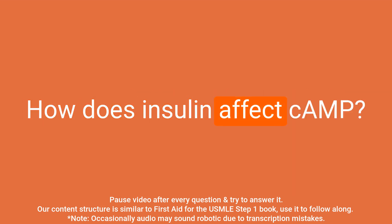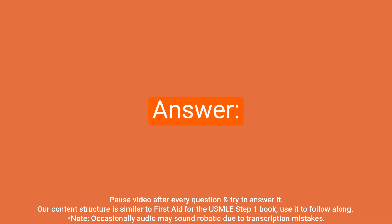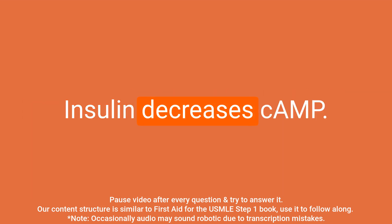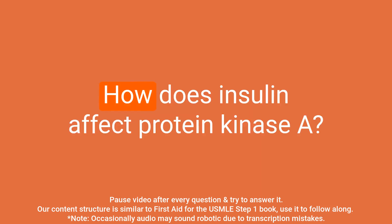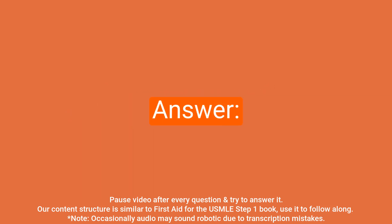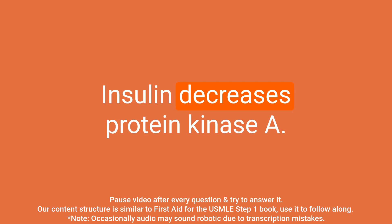Question: How does insulin affect cAMP? Answer: Insulin decreases cAMP. Question: How does insulin affect protein kinase A? Answer: Insulin decreases protein kinase A.